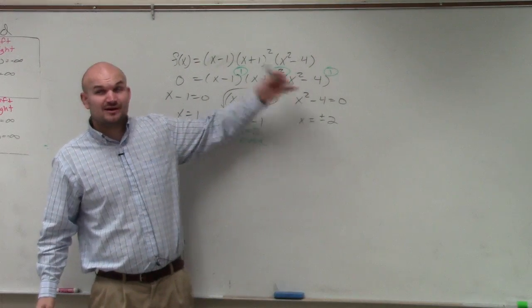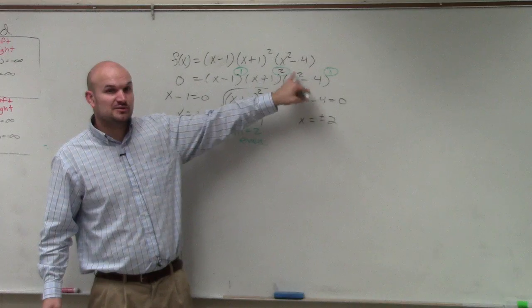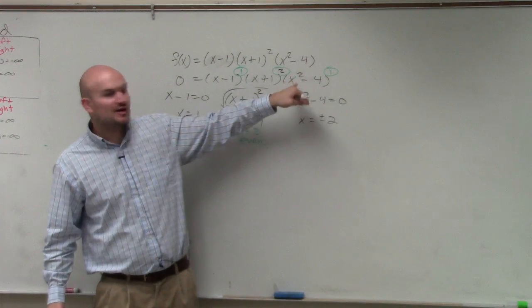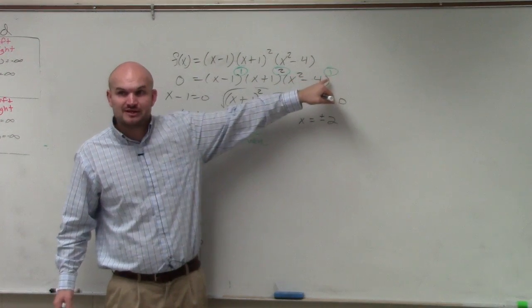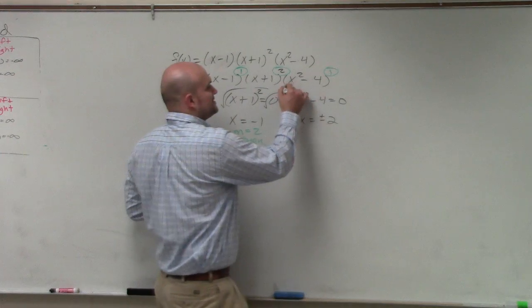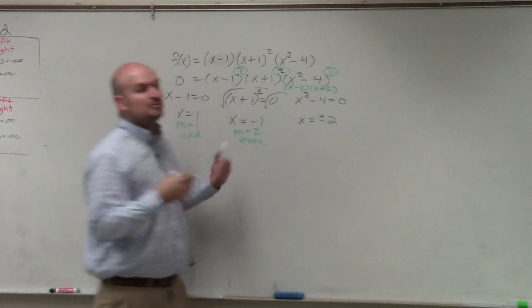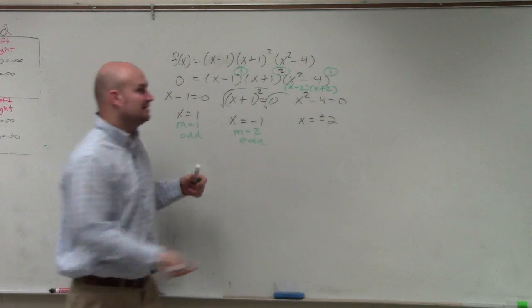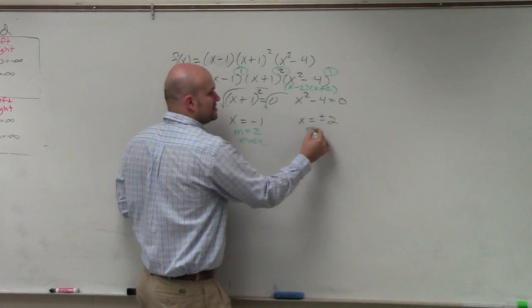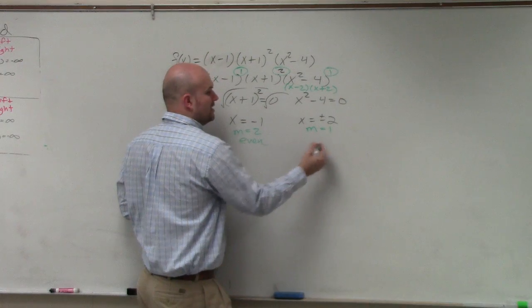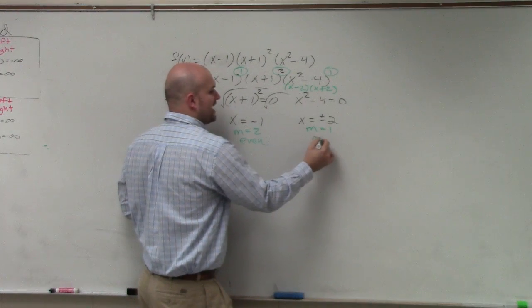Here, this actually wasn't factored all the way down. A lot of students will think that, see the 2, and they'll say, oh, it's even multiplicity. No, no, no, it's the power of the factor. Now, these could actually be factored down into x minus 2, x plus 2, where they both have a multiplicity of 1. But you could use the square root method. Just know that both of those have a multiplicity of 1. So therefore, that's odd.